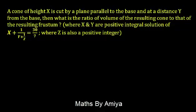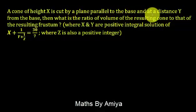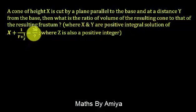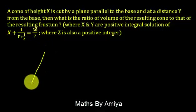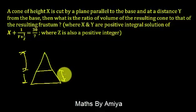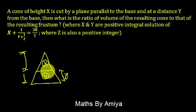Now let's solve a question. The question states: a cone of height x is cut by a plane parallel to the base and at a distance y from the base. What is the ratio of volume of the resulting cone to that of the resulting frustum, where x and y are positive integral solutions of x plus 1 by y plus 1 by z equals 30 by 7, where z is also a positive integer? So we have two parts: first, we have a cone of complete height x, and we create a small cone and a frustum by a cut parallel to the base at height y. We need to find volume of cone to volume of frustum — that is the similarity question.